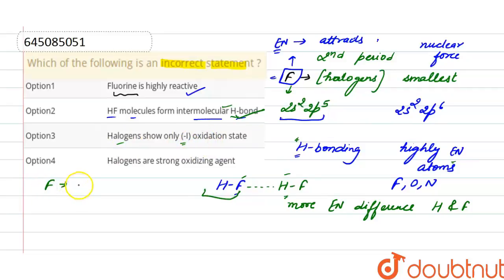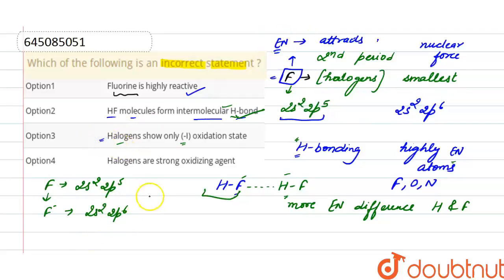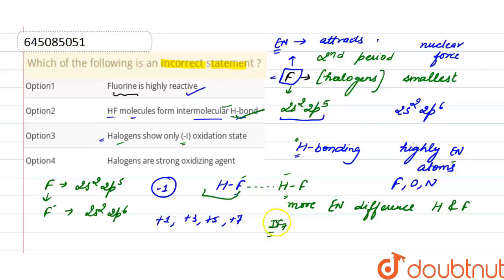Next, statement three: halogens show only minus one oxidation state. Fluorine is highly electronegative with outermost configuration 2s2 2p5, and after gaining one electron it becomes F⁻ with configuration 2s2 2p6, which is highly stable. So only fluorine among the halogens shows minus one oxidation state. Other halogens show variable oxidation states like +1, +3, +5, and +7. For example, iodine can be in the +7 oxidation state because it is much bigger in size and can lose electrons. So this statement is incorrect.